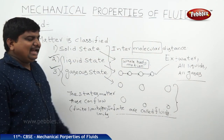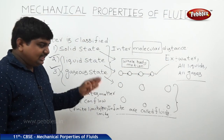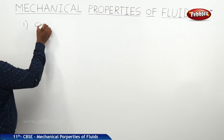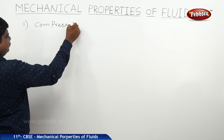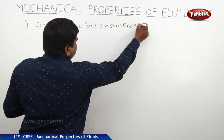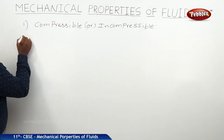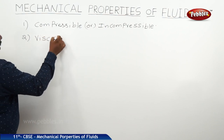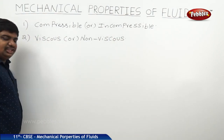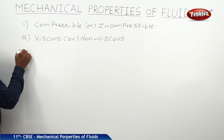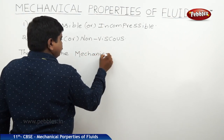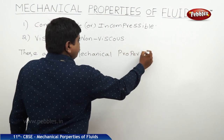Now, if a mechanical force is applied on its surfaces, how will it behave? These points we are going to discuss. The different properties of the fluids are: the first property is compressible or incompressible, and the second property is viscous or non-viscous. These two are the mechanical properties of fluids.